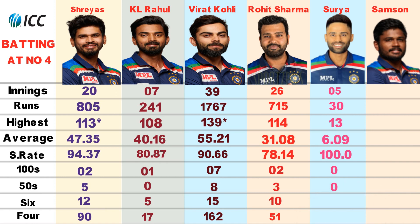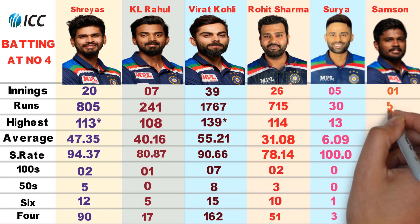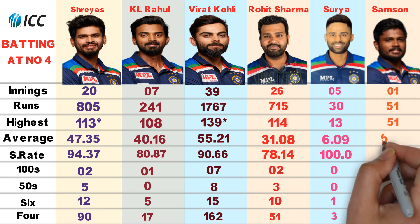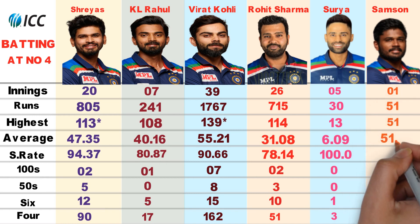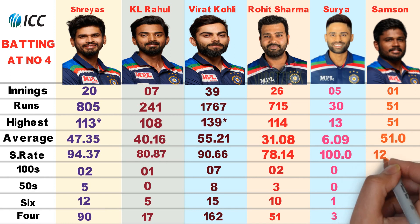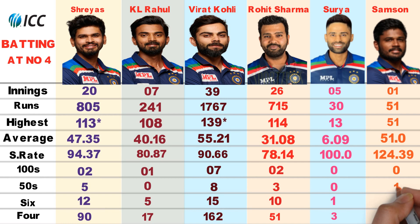Sanju Samson played only 1 innings, scoring 51 runs with a highest score of 51. Batting average 51, strike rate 124.39. He scored 1 half century, with 2 sixes and 4 fours.